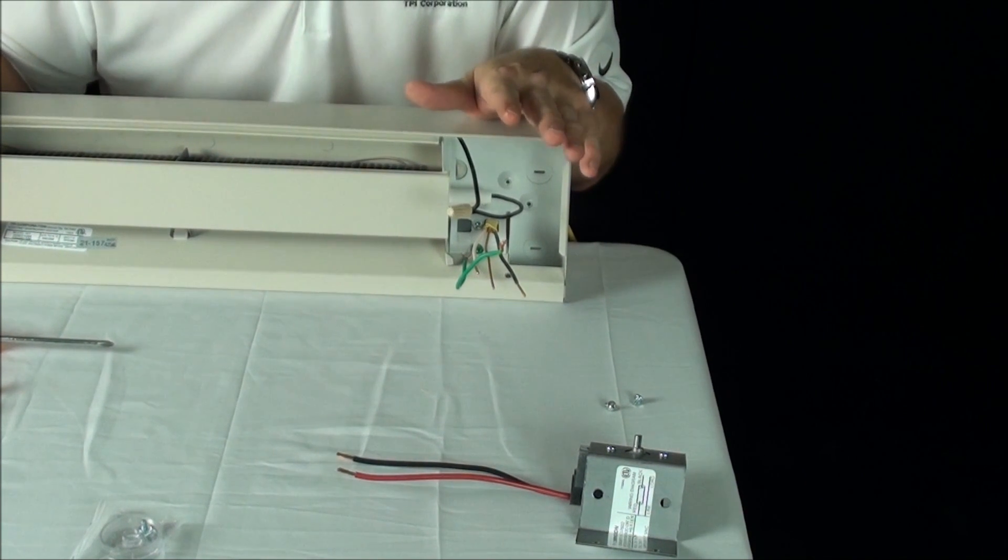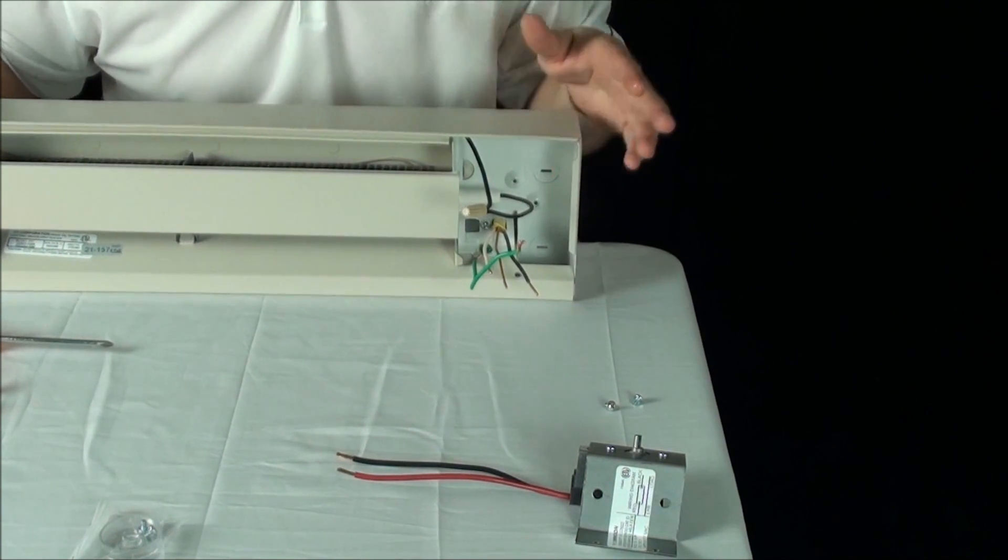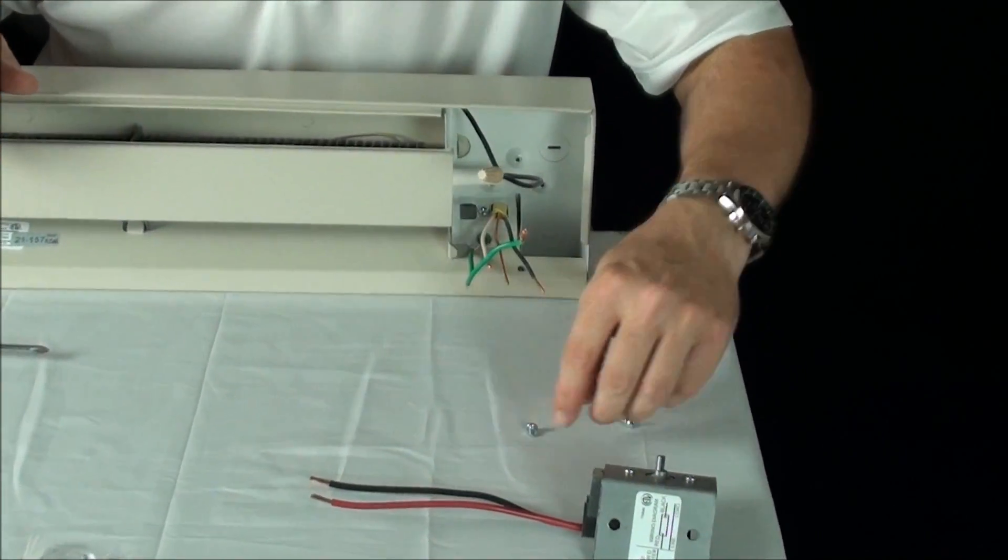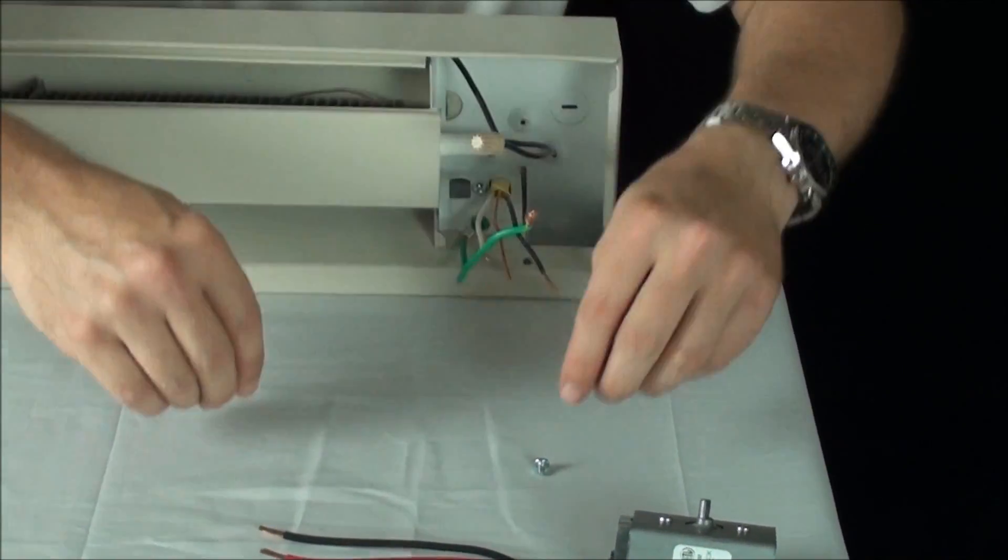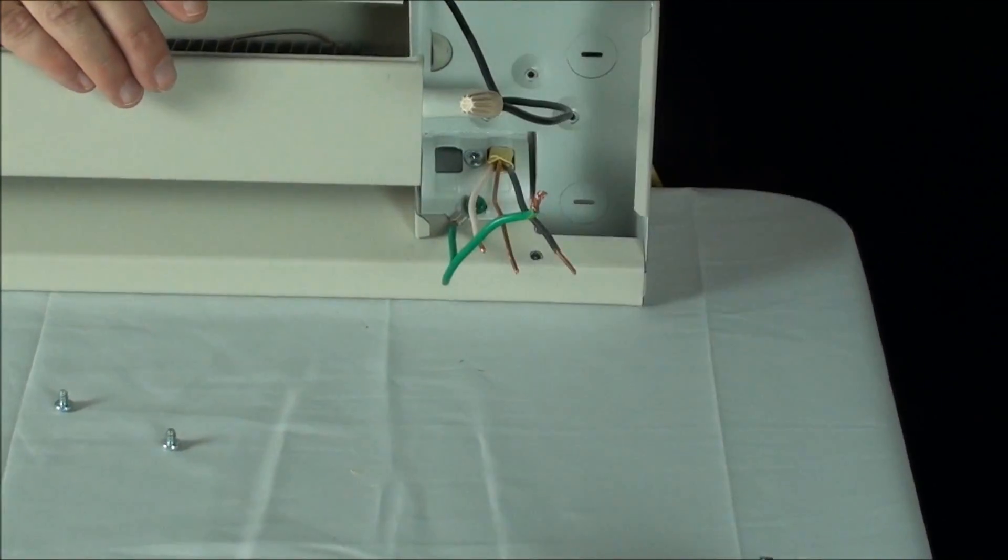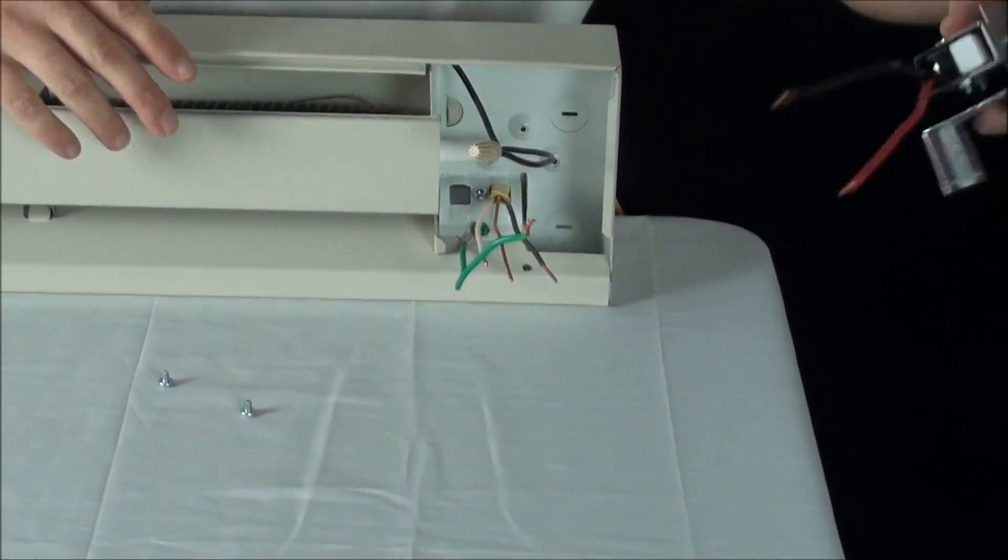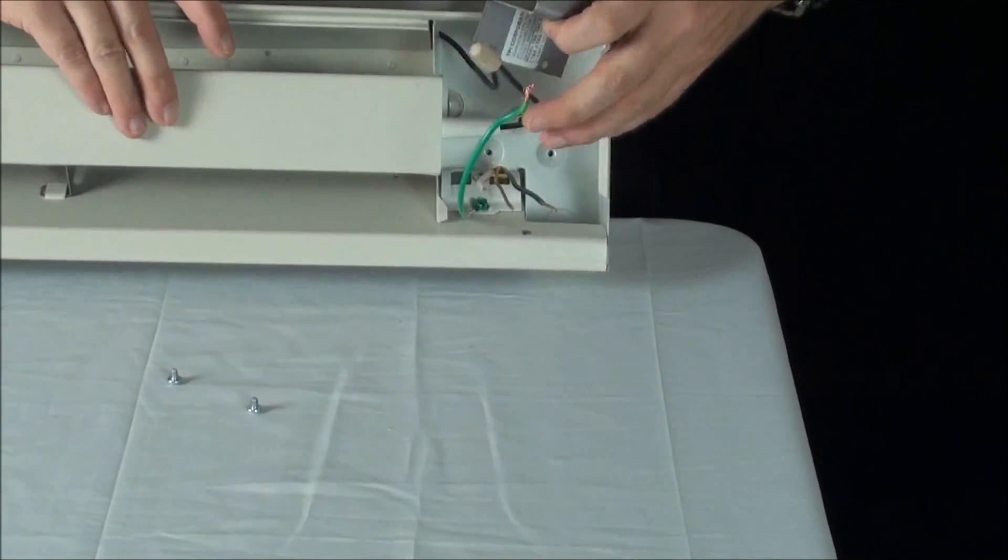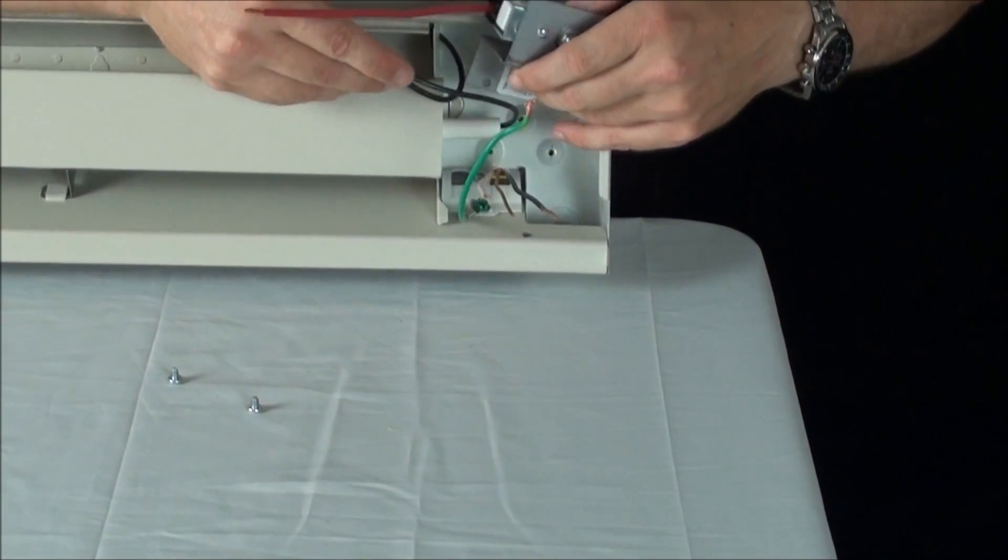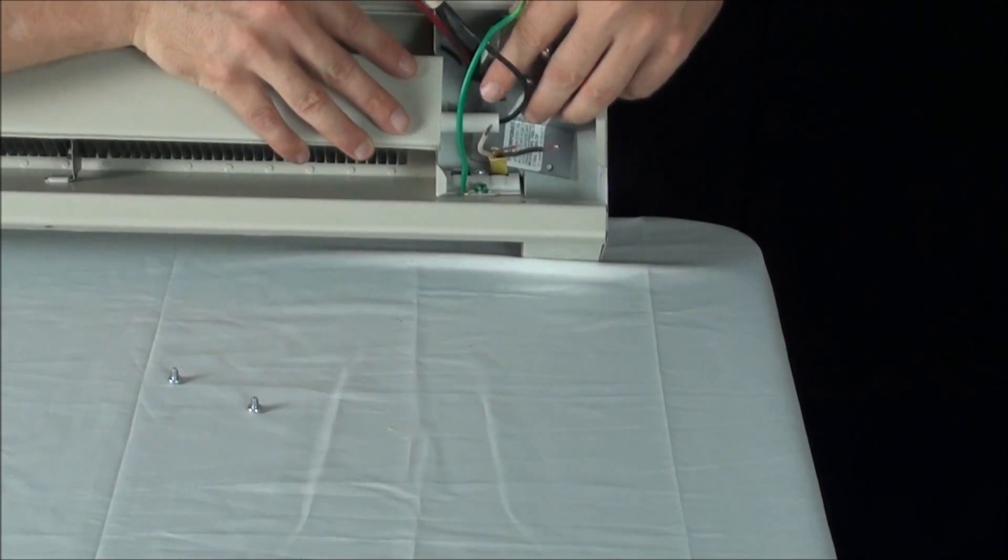Today we're going to hook up a single pole thermostat to a 2900 series TPI baseboard heater. First, after you have your heater installed and the power wire coming to your heater, install your thermostat by sliding it behind the protruding part of the element.